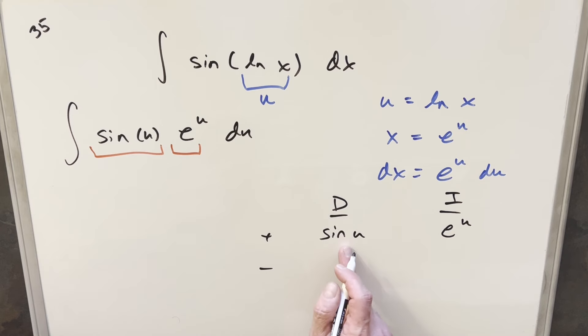I'll go ahead and differentiate here. Derivative of sine is going to be cosine, and then differentiating again, derivative of cosine is going to be minus sine of u. And then integrating e to the u, that's going to be e to the u, and then doing it again, we get another e to the u there.